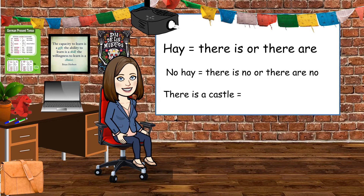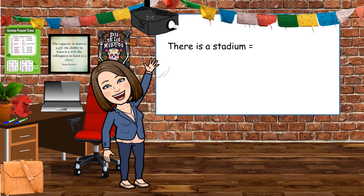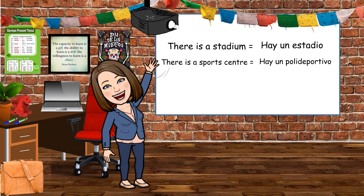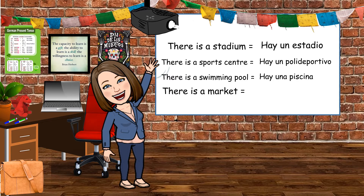How do you think you might say 'there is a castle'? Pause if you need thinking time. There is a castle — hay un castillo. What about these: there is a stadium — hay un estadio; there is a sports centre — hay un polideportivo; there is a swimming pool — hay una piscina; there is a market — hay un mercado.